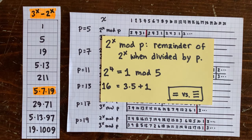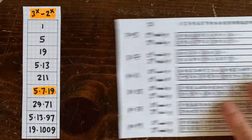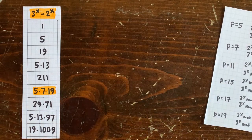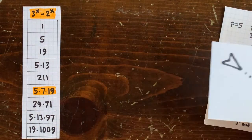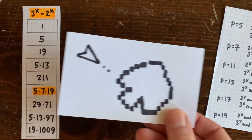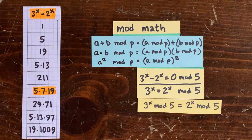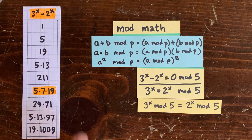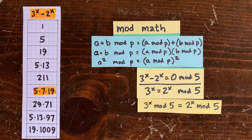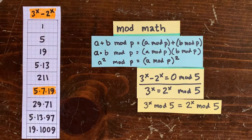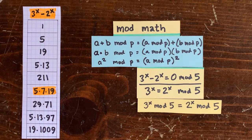Mod math is kind of like asteroids — you don't have an infinite screen. What goes off the right side reappears on the left. Otherwise it's pretty similar to regular math. So a plus b mod p is the same as a mod p plus b mod p. You don't have to multiply a and b; you can just do a mod p times b mod p. That means a squared mod p is the same as a mod p, squared.